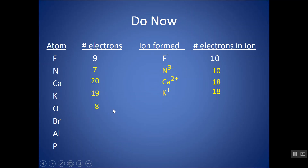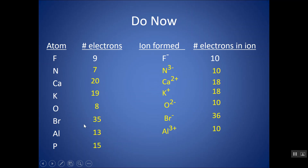Oxygen has eight electrons; it forms a two minus ion because it's in group 16, gains two electrons to have ten electrons. It has not turned into neon because it does not have the same number of protons as neon, but it does have the same number of electrons. Bromine has 35 electrons, forms a one minus charge, gains one electron to have 36 electrons like its nearest noble gas. Aluminum has 13 electrons, forms a three plus charge, loses three electrons to have 10 electrons like neon. And phosphorus has 15 electrons — in group 15, it forms a three minus charge — and would now have 18 electrons like argon.